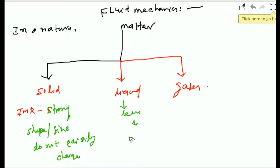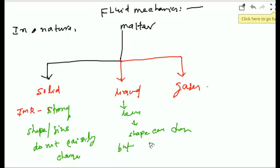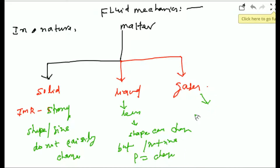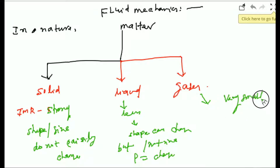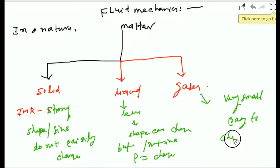In liquid, the shape can change but not the size, because density is difficult to change. But in gases, the intermolecular forces are very small, so it is easy to change the shape and density.